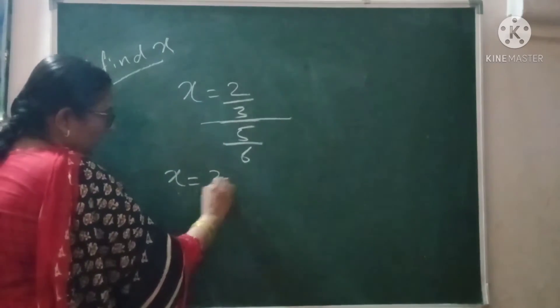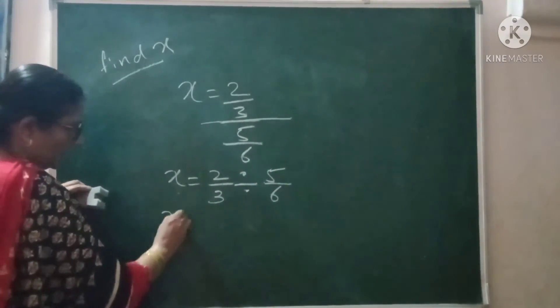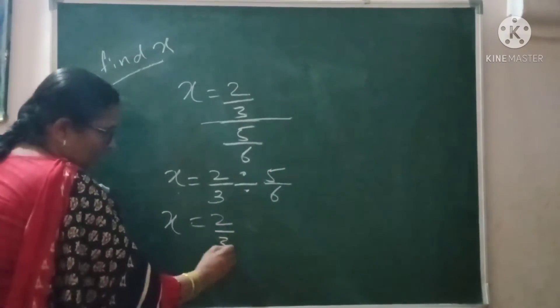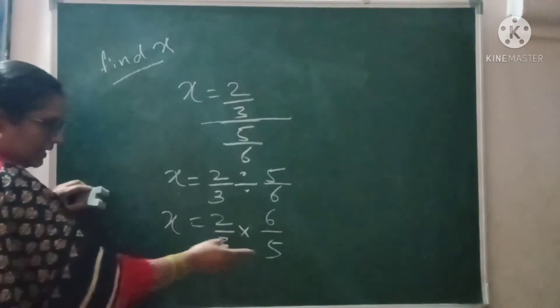Very simple, you will solve this way. 2 upon 3, make it division on this one, 5 by 6. Then you go with x is equal to 2 upon 3, division make it multiplication, 5 by 6 make it 6 by 5. If they get cancelled, otherwise keep their values. Here they get cancelled.